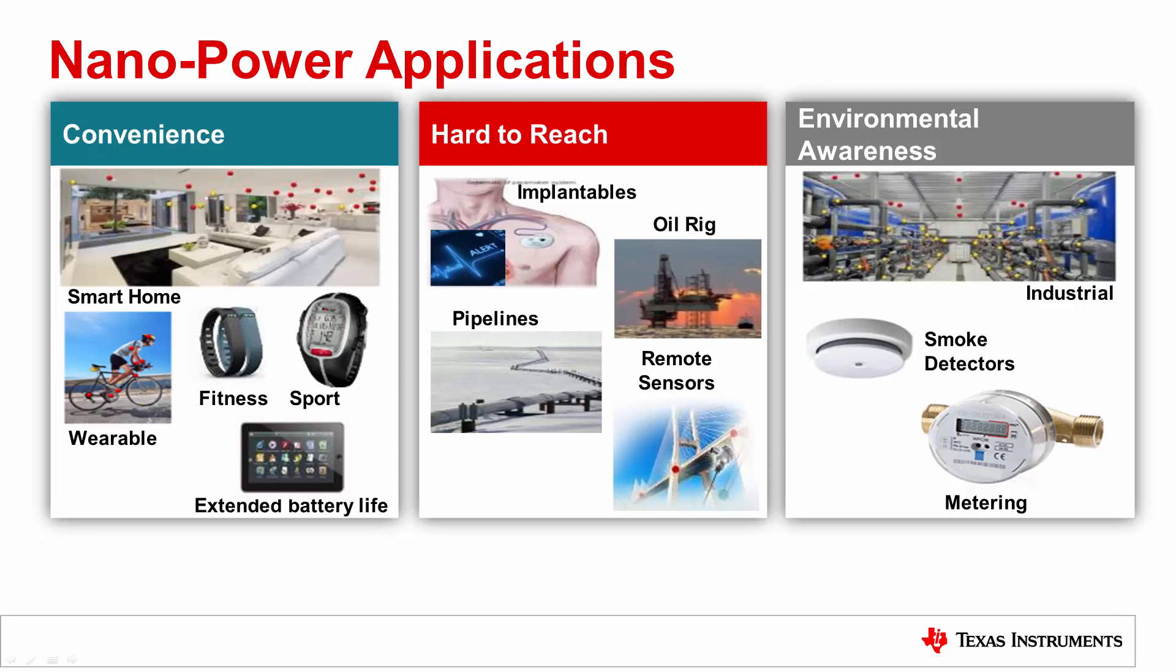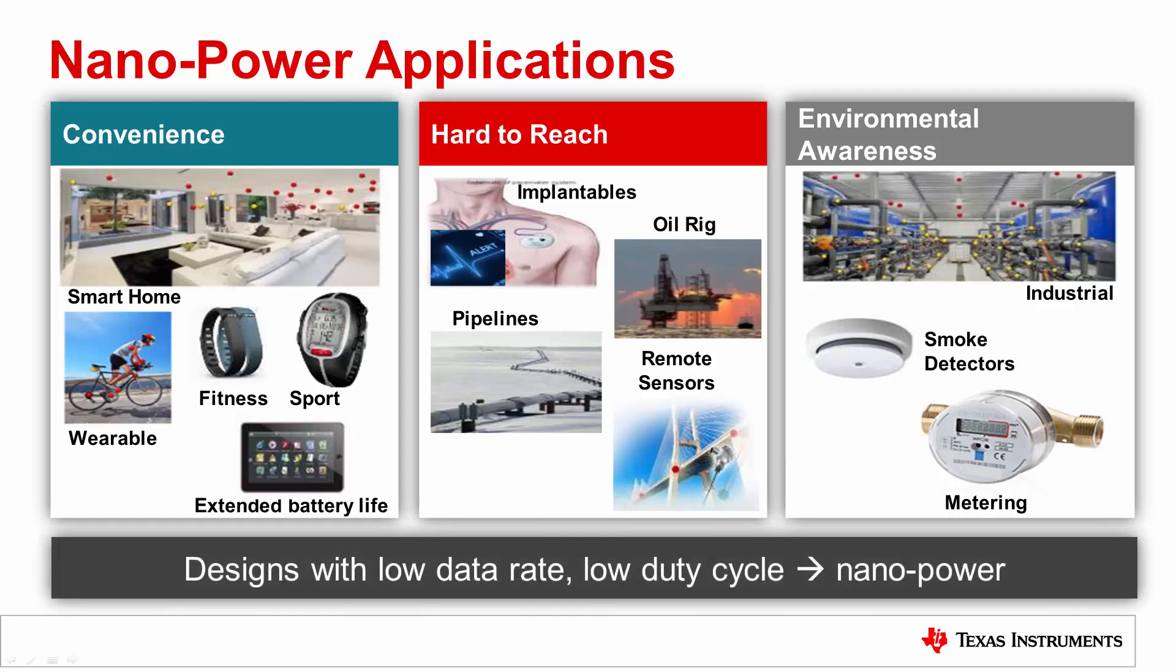Finally, environmental awareness, where the sensor is measuring the temperature, pressure, or humidity of a system and then sending that information to a central host to make decisions about reliability, process variation, and so on. These designs are all united by low data rates and low duty cycles and can therefore run on nano-average powers. As such, they are suitable for energy harvesting.